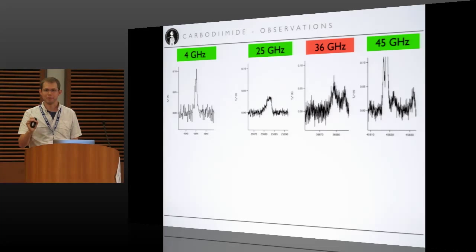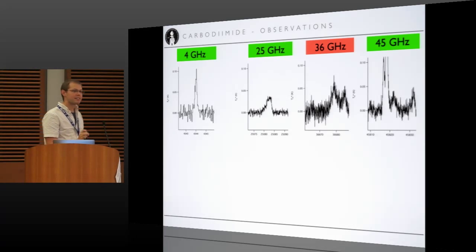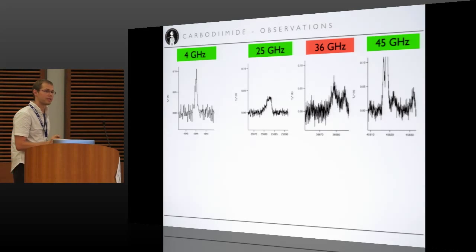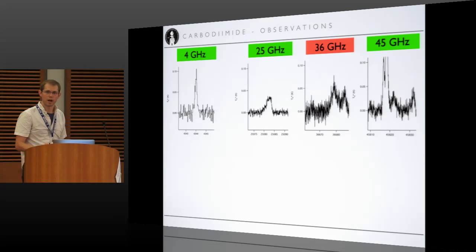So there's very little carbodiimide out there, there's not very much of it. But we were able to detect it because it's undergoing these masing transitions. And this way, we can get around the rule of having to see every transition that was measured in the lab by explaining with physics why some of them are brighter than others in this specific environment.